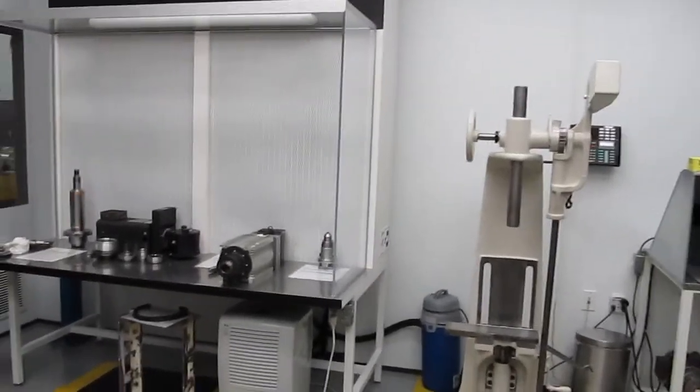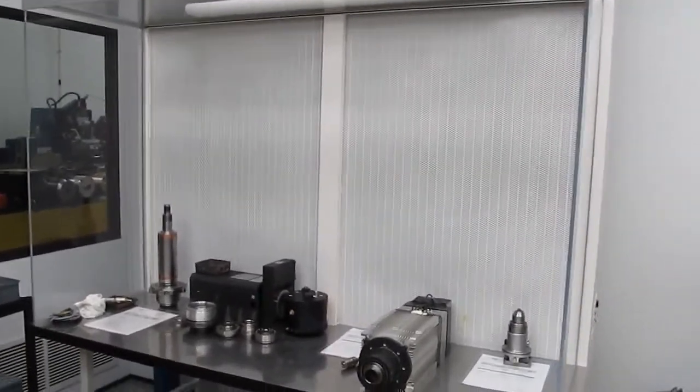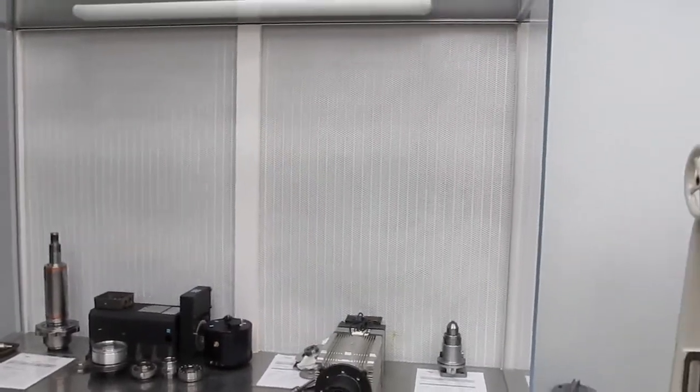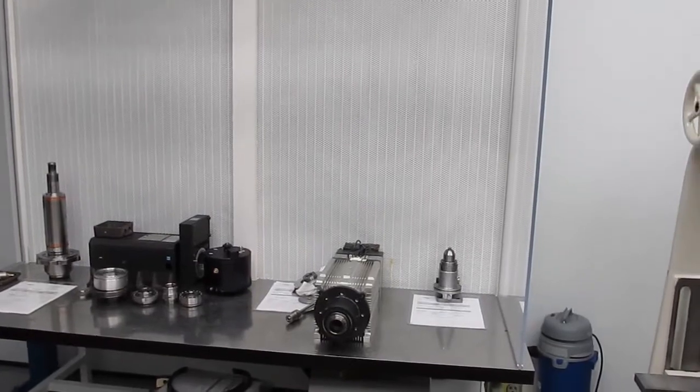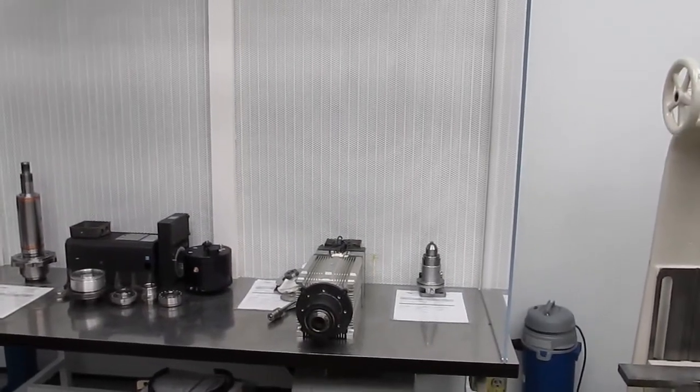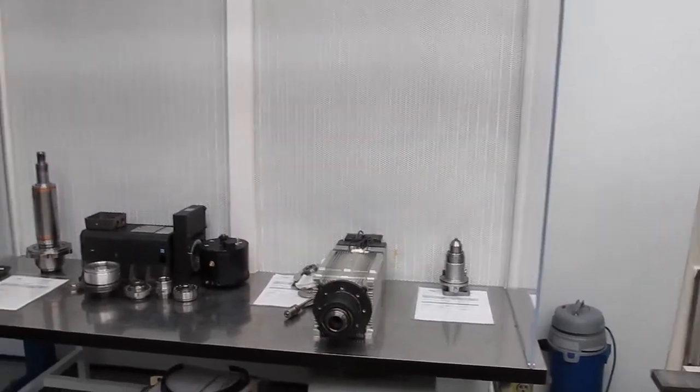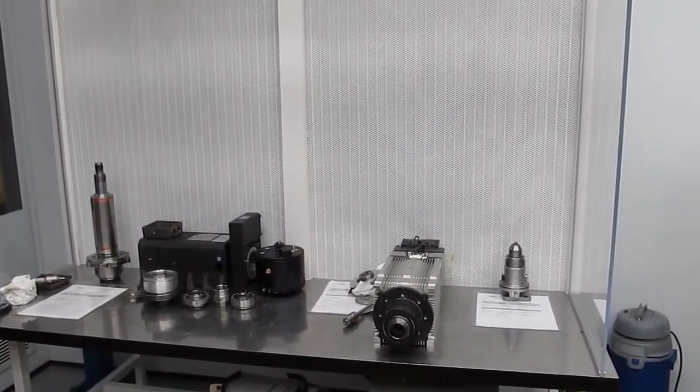And what is this section over here? This is our laminar flow bench. Sometimes it's used to store spindles that are at a halfway point to keep contamination off during storage. Typically, it's used to build some of our smaller high-speed spindles.